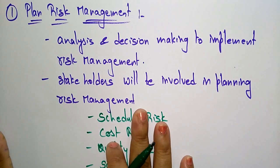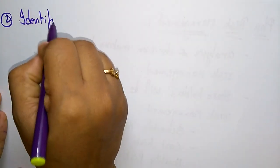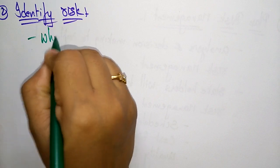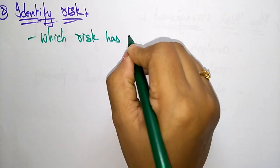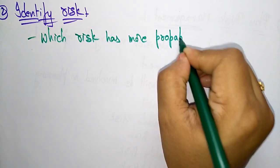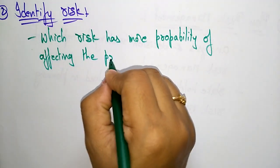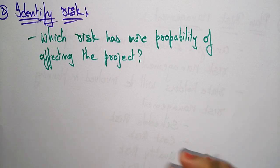The second risk process in project management is Identify Risk. When identifying risk, you need to determine which risk has more probability of affecting the project. Whichever risk is most likely to affect the project needs to be identified first — that is one key way of identifying risk.